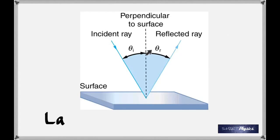The reflected ray goes in such a way that the angle of reflection is always equal to the angle of incidence — always. So that's the first law of reflection: theta i is equal to theta r, all the time. It doesn't matter whether the surface is plain or whether it's curved; if light is reflected, that law is always followed.